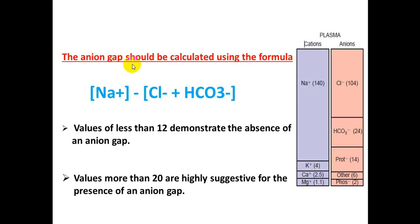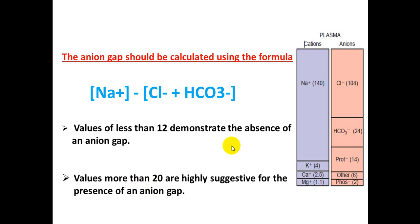What is the anion gap? The anion gap is the difference between serum cations and serum anions, calculated by: serum sodium minus the summation of serum chloride and serum bicarbonate. In renal tubular acidosis, the anion gap is normal — less than 12. A value of more than 20 suggests the presence of an anion gap.